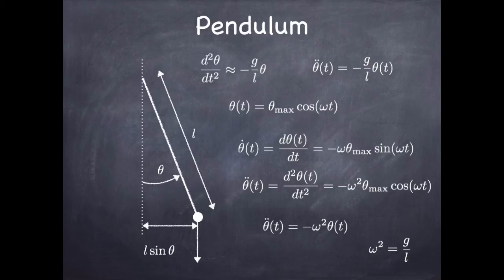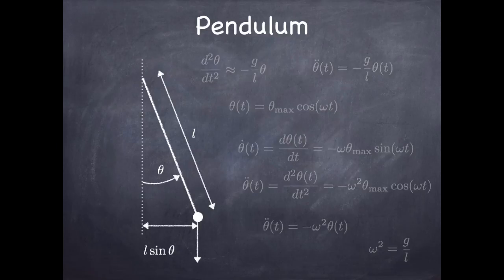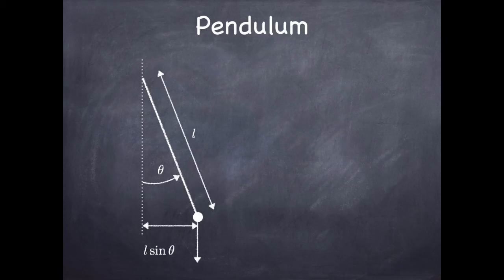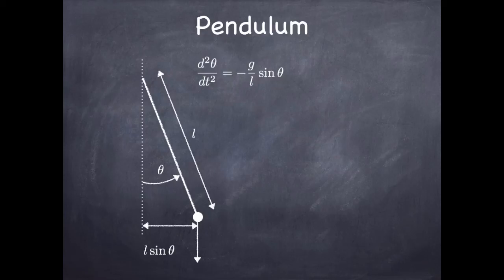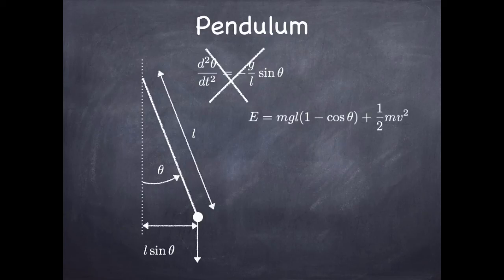That gives a solution in the small angle approximation, and from ω you can work out the period: T = 2π/ω. Now, we want to deal with the large amplitude case where the angle is not small. One approach would be to go back and try to solve that differential equation, but that's not the approach we'll take today — we're going to use energy considerations.